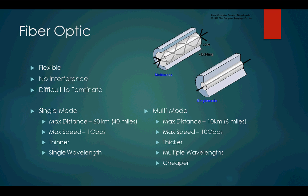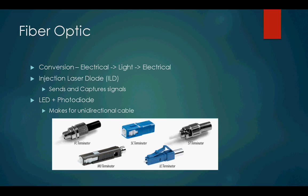The only problem with fiber optic is that it's much harder to terminate, because you have to account for the fact that it uses light — if done slightly wrong, the light won't be received correctly and you lose signal. You also have to convert the electrical signal at your modem to light, and then convert it back to electrical at the other end. There are two ways: you can use an ILD, which can send and receive signals, or use a unidirectional fiber optic cable with a bulb at one end sending light and a diode at the other receiving it.